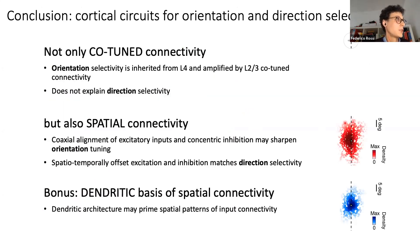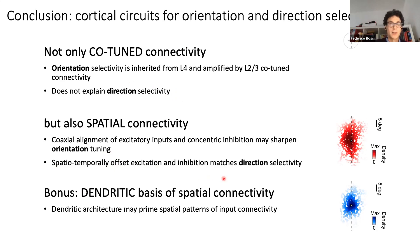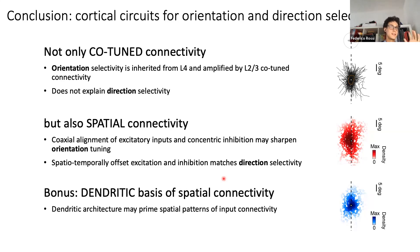To conclude, there are different circuits at play to produce orientation and direction tuning in V1. Co-tuned connectivity can generate orientation selectivity but does not explain direction tuning. Spatial connectivity is important — it can sharpen orientation tuning established by co-tuned connections, and appears fundamental to establish direction selectivity through the offset between excitatory and inhibitory presynaptic connections. We also have another exciting project suggesting these input patterns may be primed by the architecture of dendritic trees of postsynaptic neurons showing similar spatial patterns, but that is for the future.